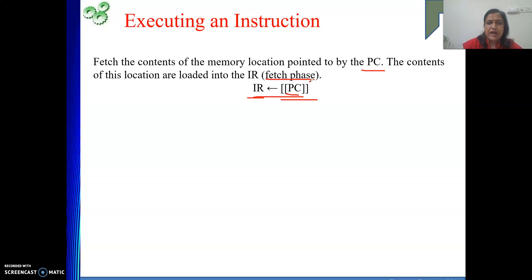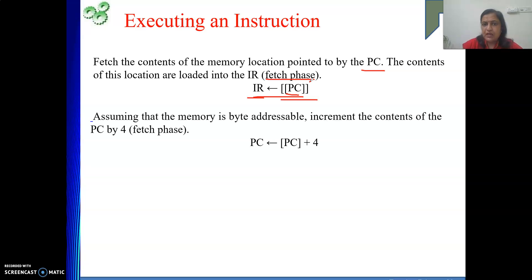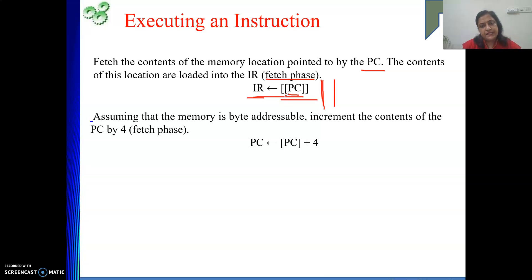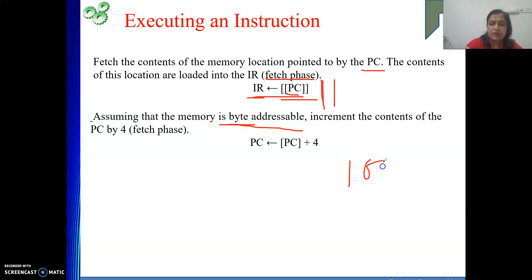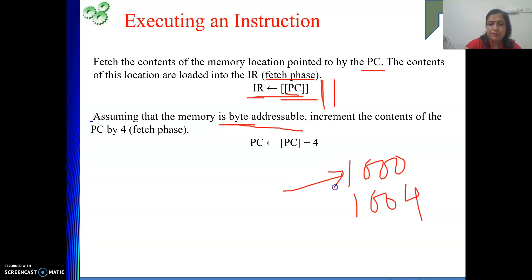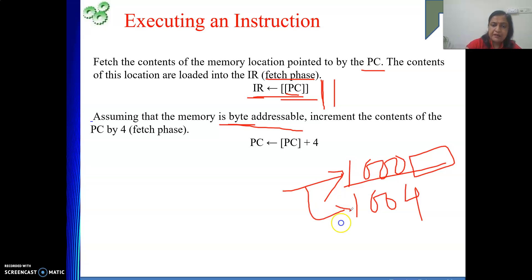After fetching the instruction, the next part is decoding. But before that, during the fetch phase we need to wait for memory to give us the instruction. While waiting, we utilize that time to increment the PC to point to the next instruction in sequence. Our assumption is that memory is byte addressable, meaning one location holds eight bits, and each instruction is the same length — one word, which is four bytes here. So if one instruction is at location 1000, the next is at 1004, the next at 1008. During the wait for memory, PC is incremented to point to the next instruction.